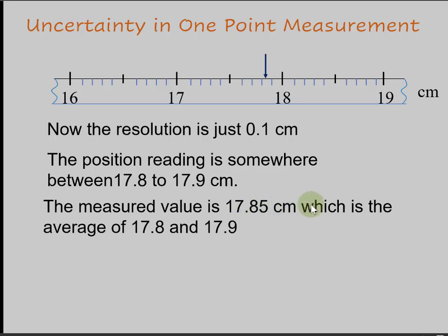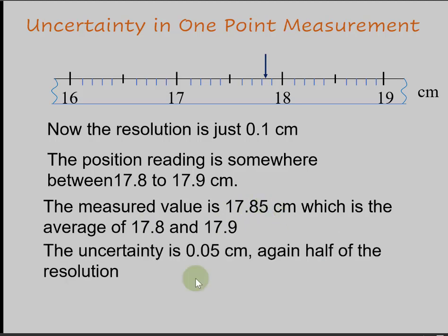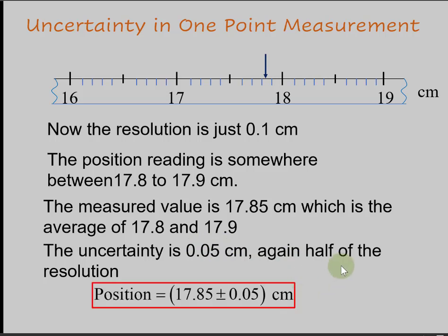Therefore, the measured value is the average of these two numbers, which is 17.85 centimeters. The uncertainty is half of the resolution, which is 0.05 centimeters. In this case, the position reading looks a lot better.